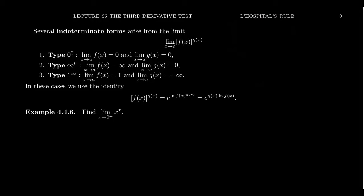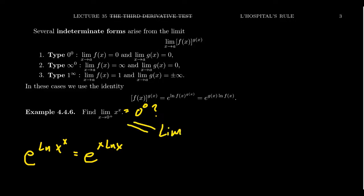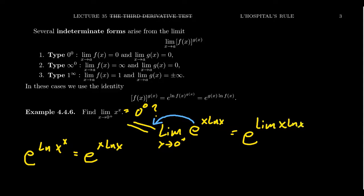Consider the limit as x approaches 0 from the right of x to the x. If we just plug in 0, we get 0 to the 0, which is an indeterminate form. So we rewrite it as e to the natural log of x to the x, which becomes e to the x times the natural log of x. Since the exponential function is continuous, we can pull the natural exponential out, giving e to the limit of x times the natural log of x as x goes to 0.